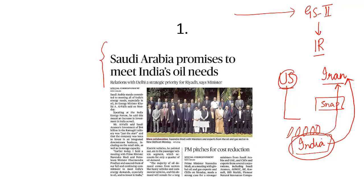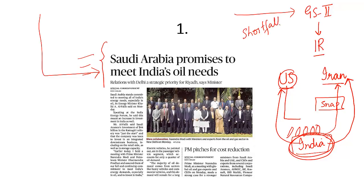India is dependent upon Iran for its crude oil needs. Iran is one of the three largest exporters of crude oil to India, the other two being Saudi Arabia and Iraq. India is trying to reason with the United States that it cannot snap all ties with Iran because of this energy dependence.